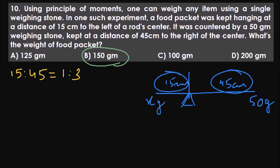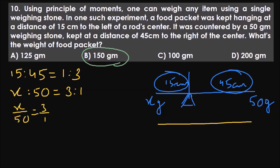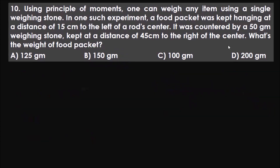The ratio of the distances is 15:45, which equals 1:3. In equilibrium, the ratio of the weights must be the inverse of the ratio of distances — so x:50 = 3:1. Therefore x equals 150 grams. That is the answer. We've reached the end of part 1 — part 2 will be up very soon. Please watch again if anything was unclear, comment with any doubts, and consider subscribing. Thank you so much.